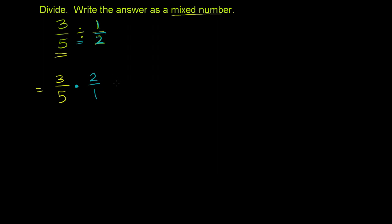And we just do this as a straightforward multiplication problem now. 3 times 2 is 6, so our new numerator is 6. 5 times 1 is 5. So 3 fifths divided by 1 half as an improper fraction is 6 fifths.